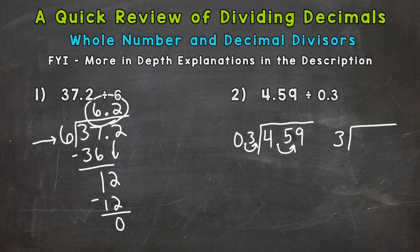Now we rewrite our problem with that whole number divisor, and our decimal in the dividend is now between the 5 and 9. Our divisor is whole, so we can bring that decimal straight up. 4 divided by 3—how many whole groups of 3 can I pull out of 4? One. 1 times 3 is 3. Subtract and bring down.